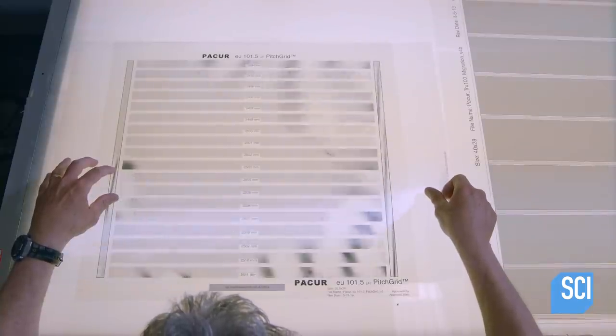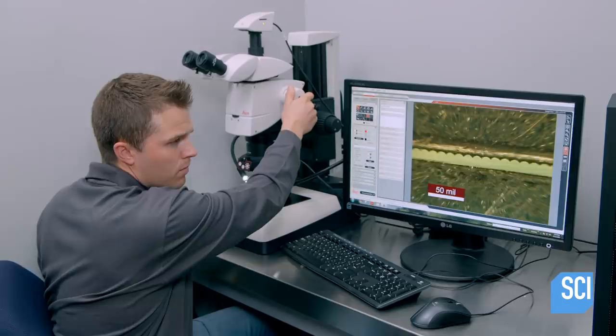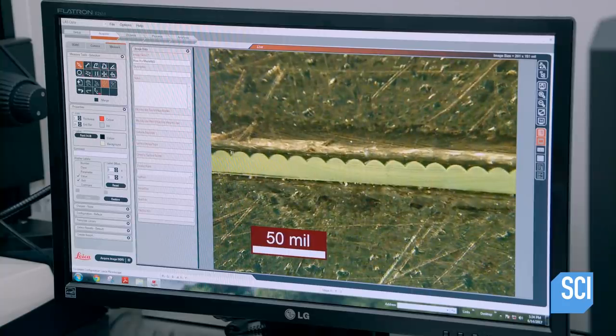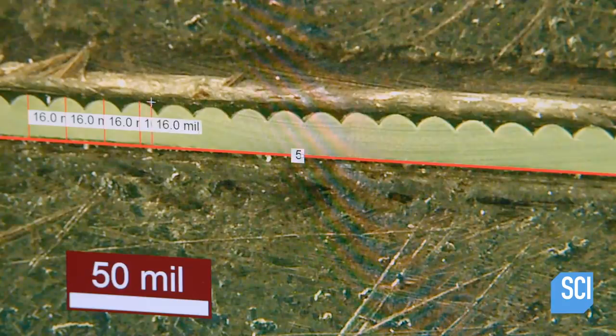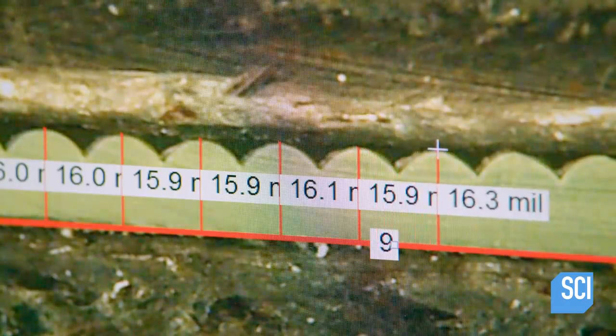To confirm their size and alignment, an inspector views them against a pitch test pattern. Another inspector magnifies a sample 100 times and measures the thickness of the lenses. Too thin or thick, and the lens display won't focus.